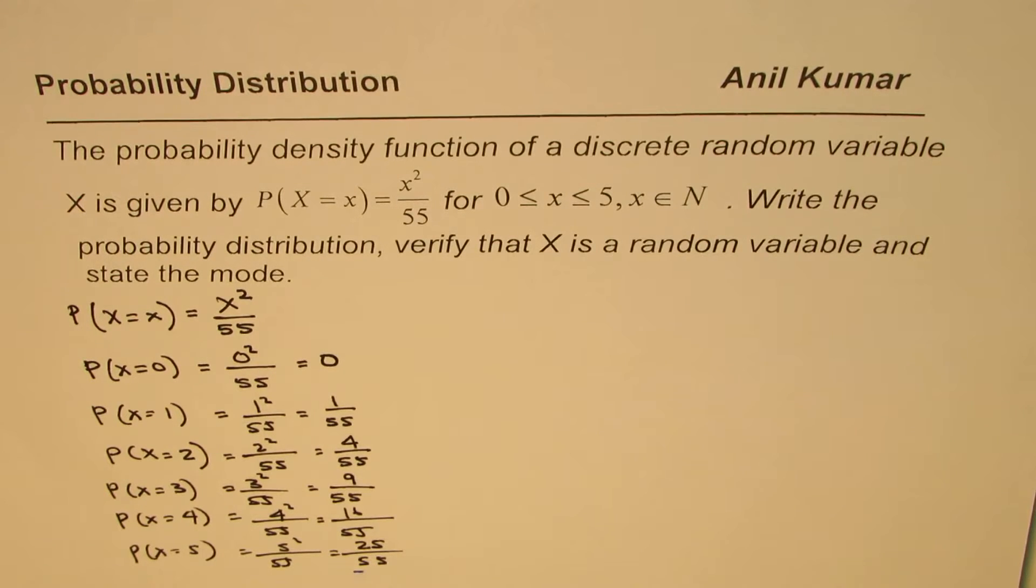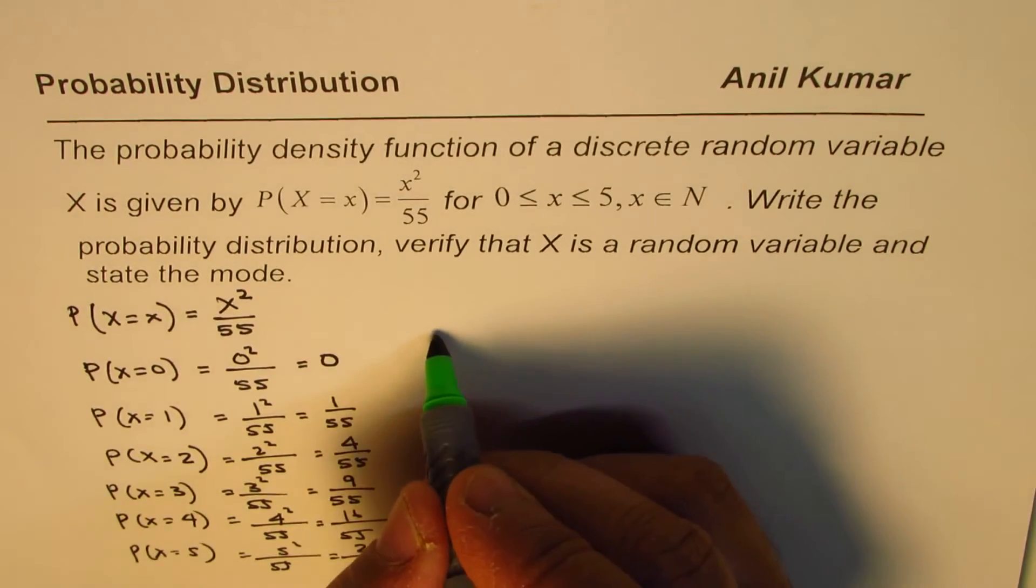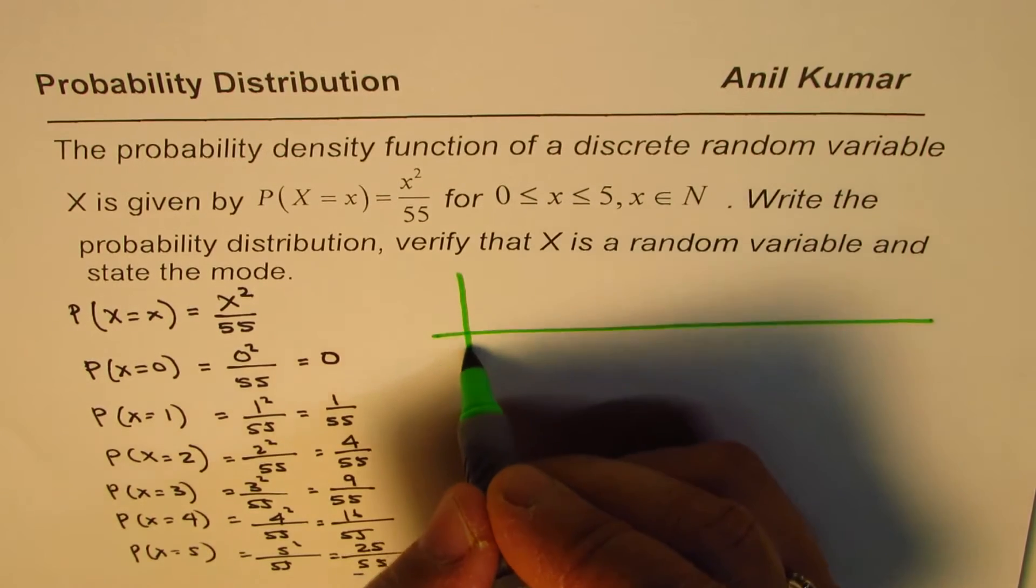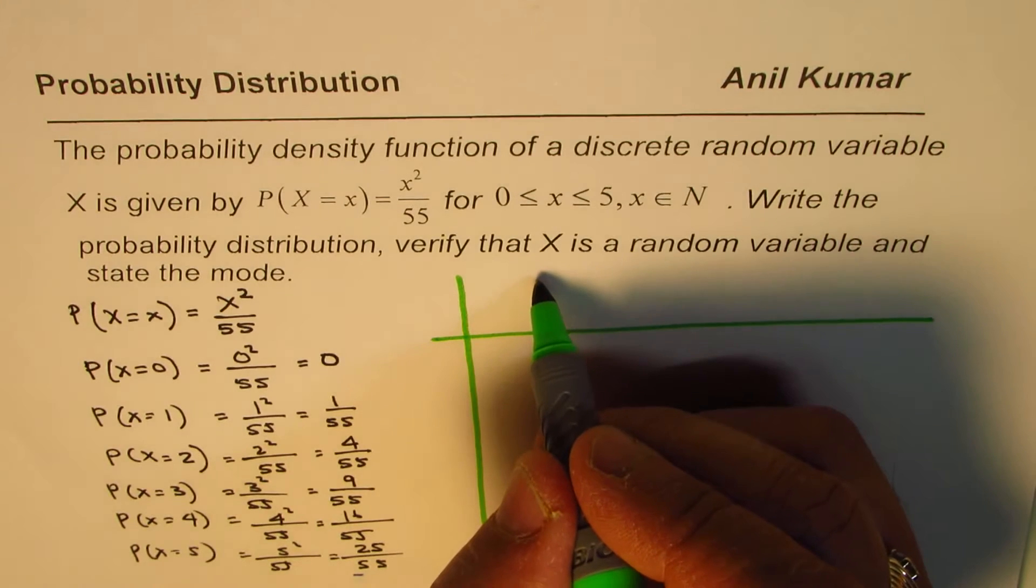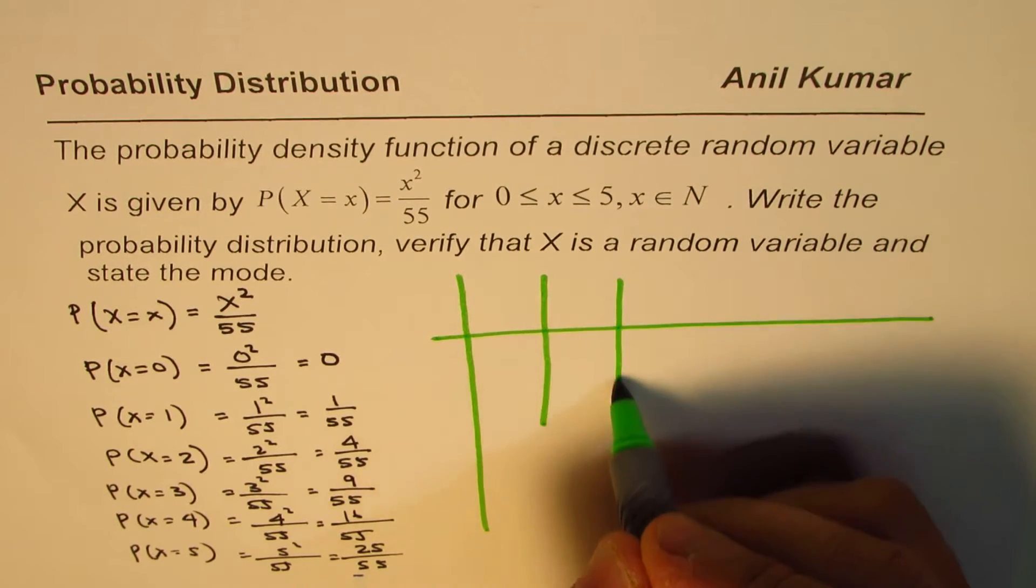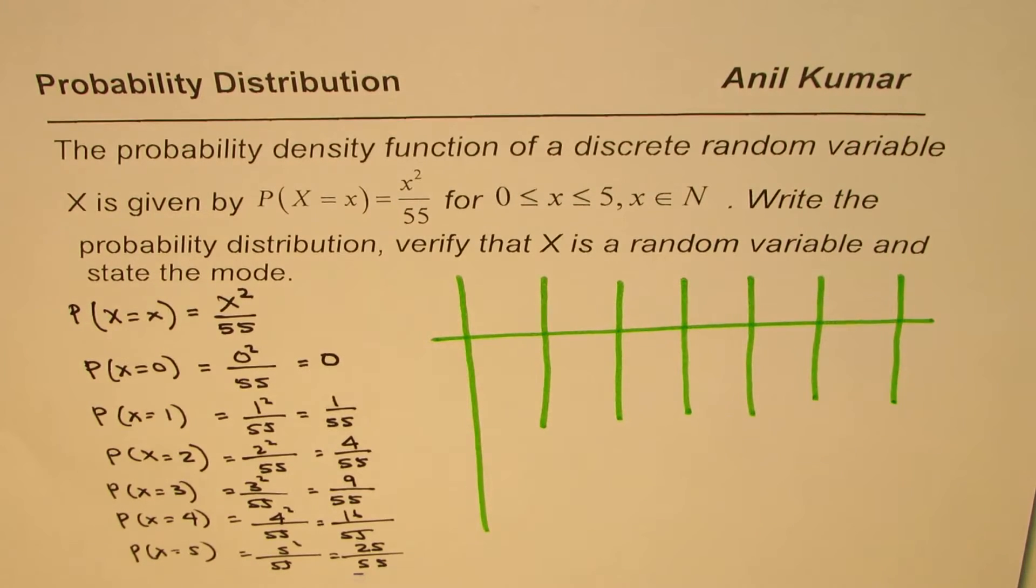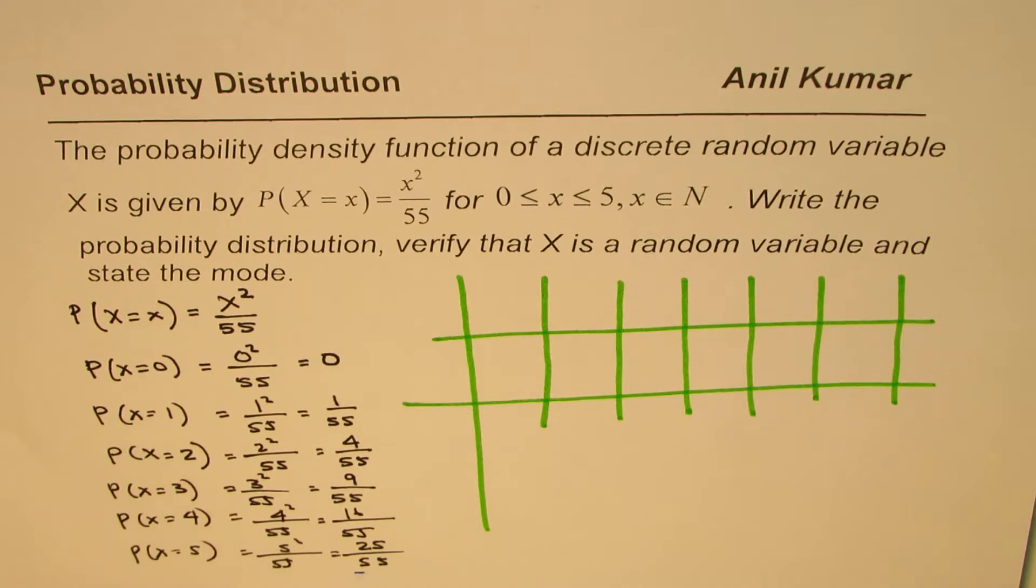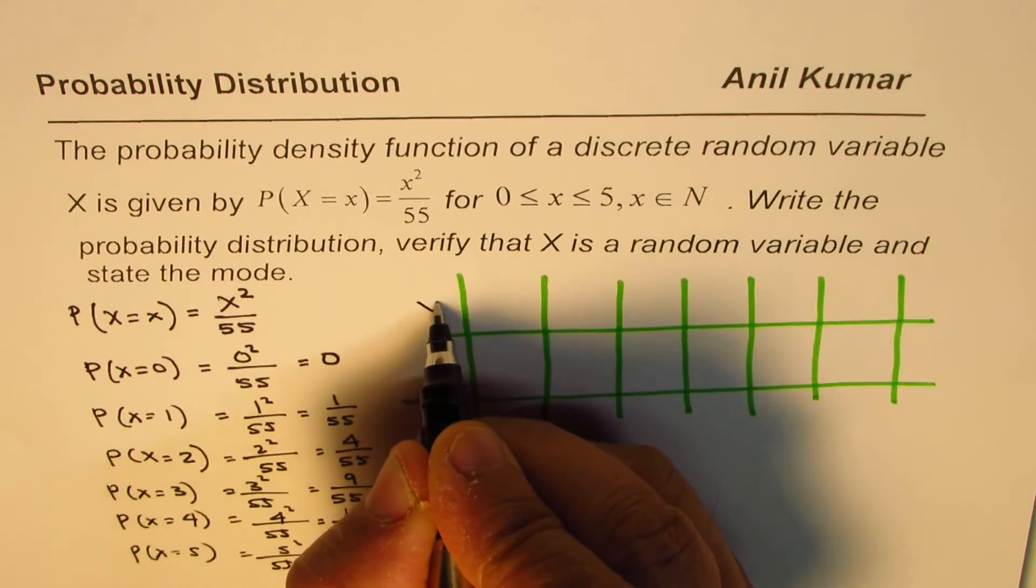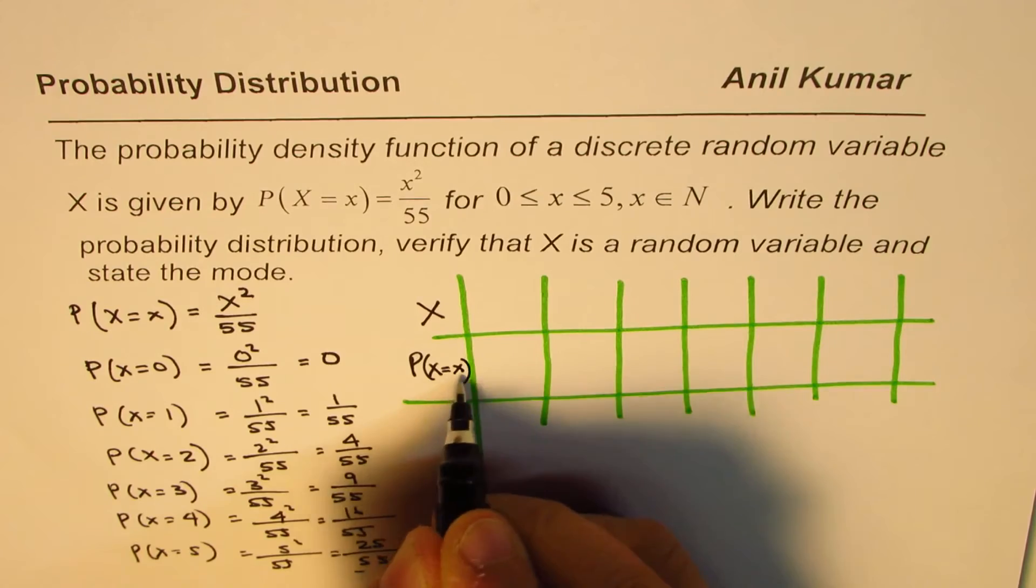Now from here, we can write the probability distribution. In probability distribution, we will make columns for each, which is 5 columns. So we have 0, 1, 2, 3, 4, and 5. Let me write down these columns. What we have here is the random variable x, and the probabilities for x equals lower small x.